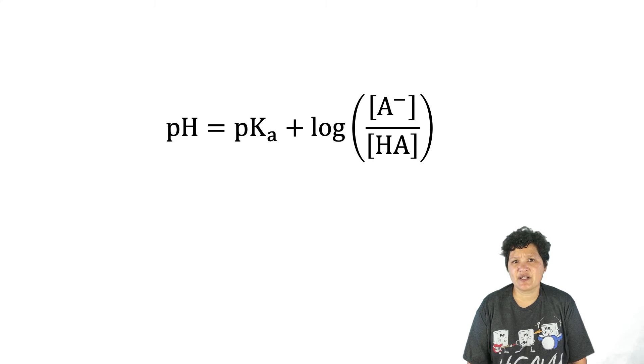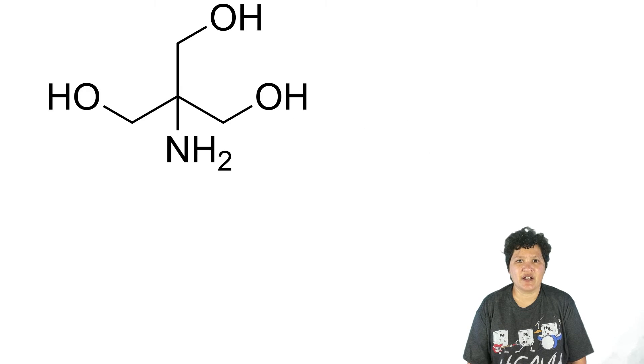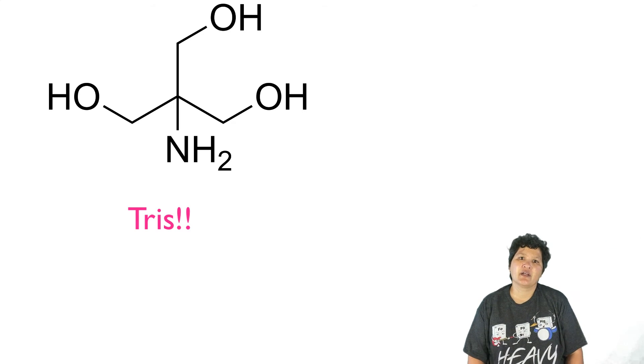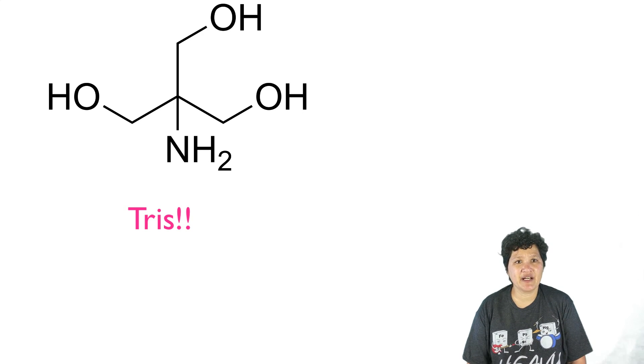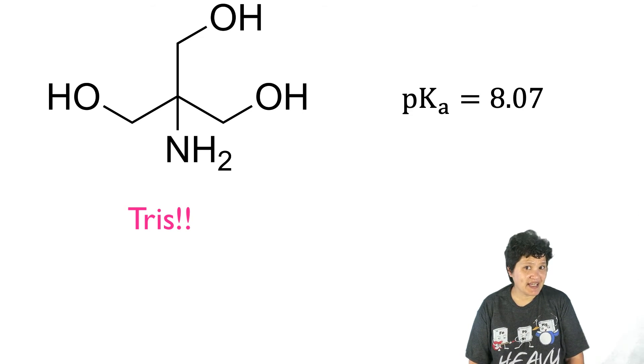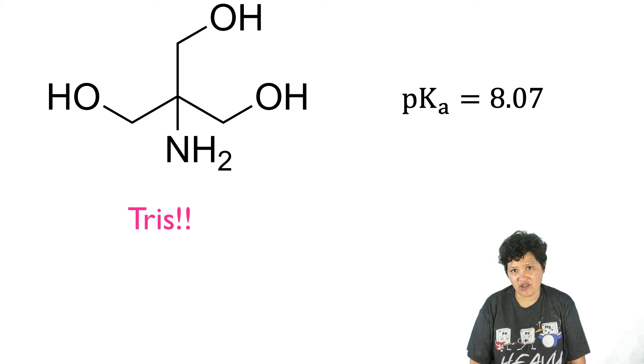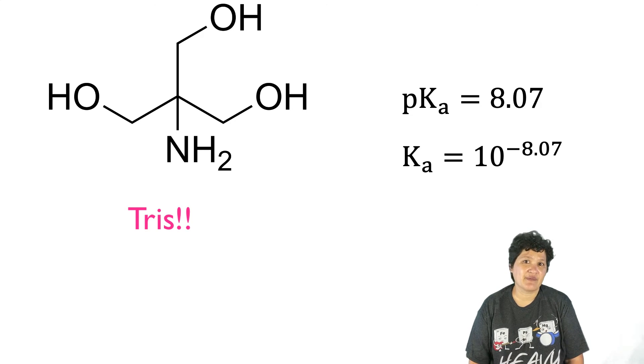So let's look at some examples involving a weak acid, Tris-hydroxymethylaminomethane, which most lab people just call Tris. Tris is commonly used in biology labs as a buffer for growth media, among other things. Its pKa is listed as 8.07. Quick reminder that the pKa is the negative log of Ka, and so Ka would be 10 to the minus pKa. So the Ka of Tris would be 10 to the minus 8.07.